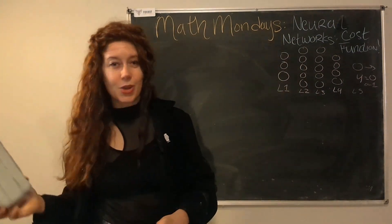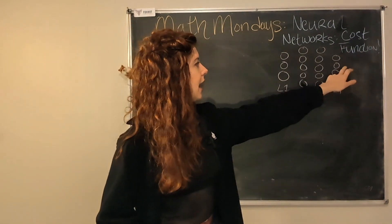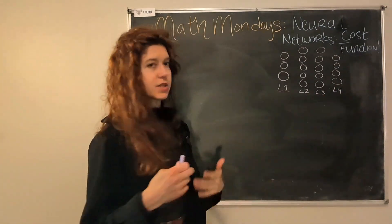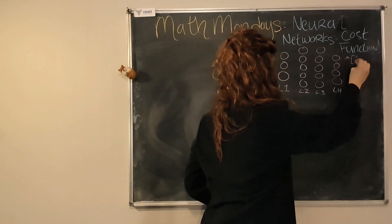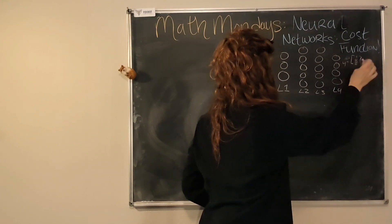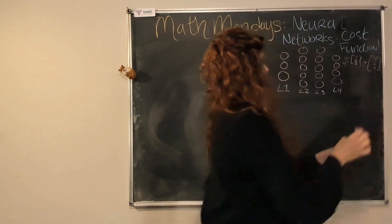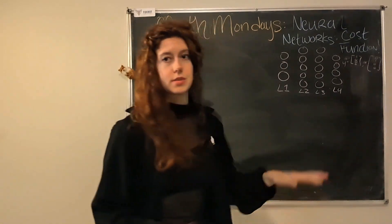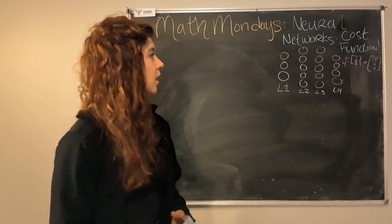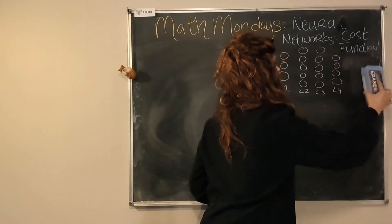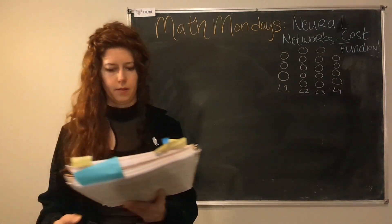But we could also have multi-class classification. We could have an output that gives us one of four possible outcomes. For example, this output might be zero, one, zero, zero — or you just move the one down and put zeros in the other places. So it could be one of four different possibilities where each of these nodes is turned on. That is multi-class classification. It doesn't have to be four — you could have K number of output units.